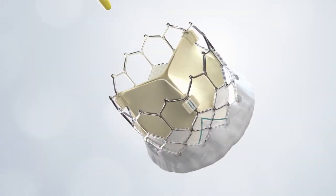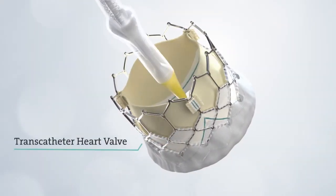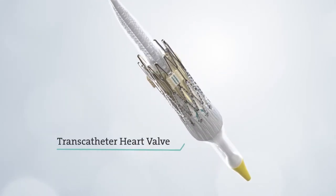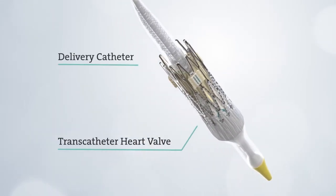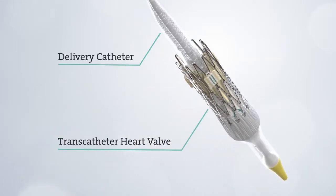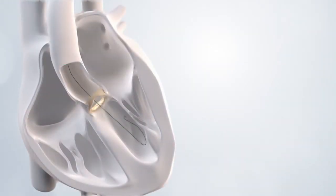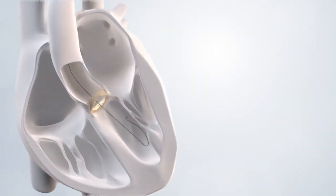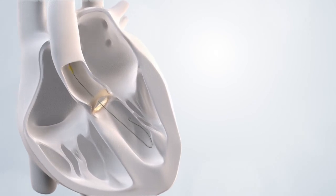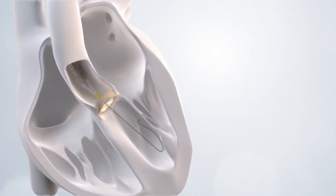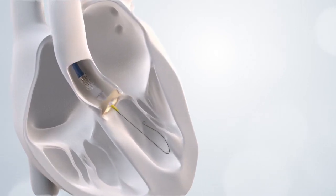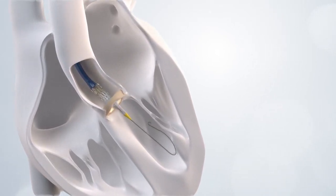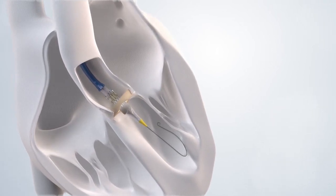During the next step, your new transcatheter heart valve is crimped onto a delivery catheter, which makes the valve small enough to fit through a sheath, so it can be delivered to your heart. Using a special type of x-ray, your doctor will guide the delivery catheter carrying the new valve through the sheath and up to your aortic valve.